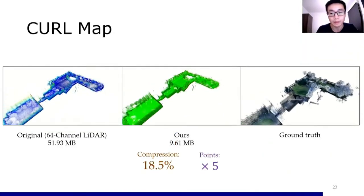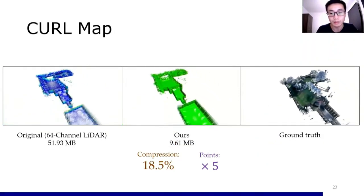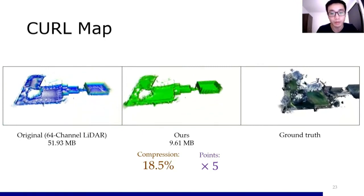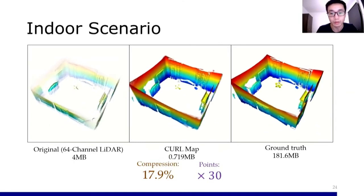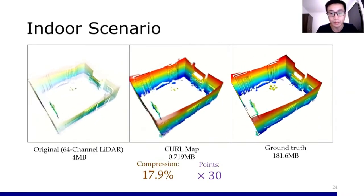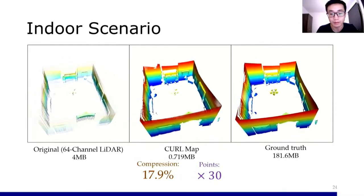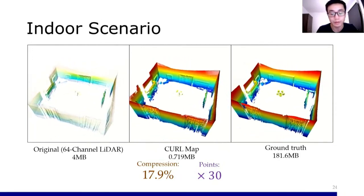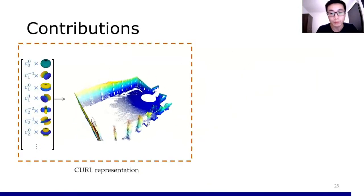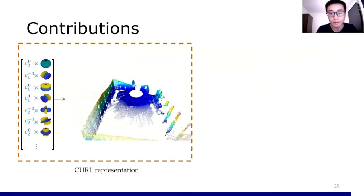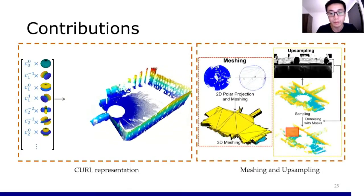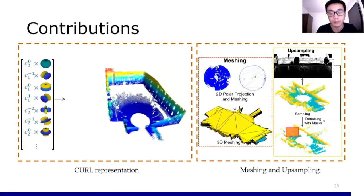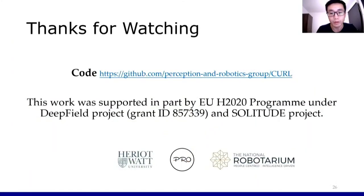The green map is after integrating the denser point cloud. Our result takes less storage space but with comparable point numbers to ground truth. In another indoor scenario example, we can increase the point number to about 30 times more than before and the size is only about 18% of the original. In summary, our two main contributions are: the 3D LiDAR point cloud representation pipeline, and an efficient meshing method and upsampling technique to solve the sparsity problem. Please find our paper and code for more information.